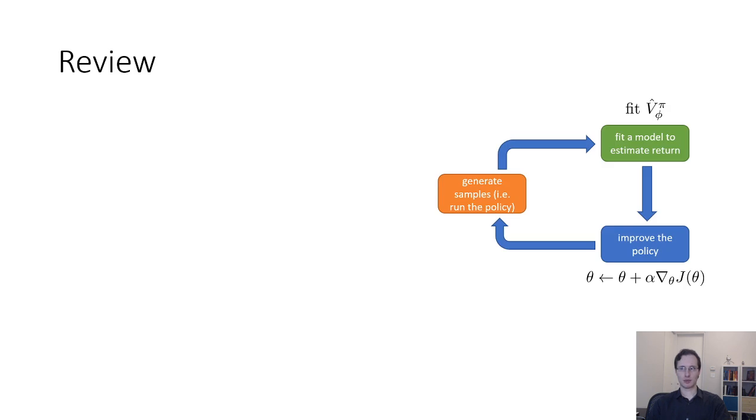To summarize what we've covered, we discussed how an actor-critic algorithm consists of several parts: an actor, which is the policy, and the critic, which is the value function.